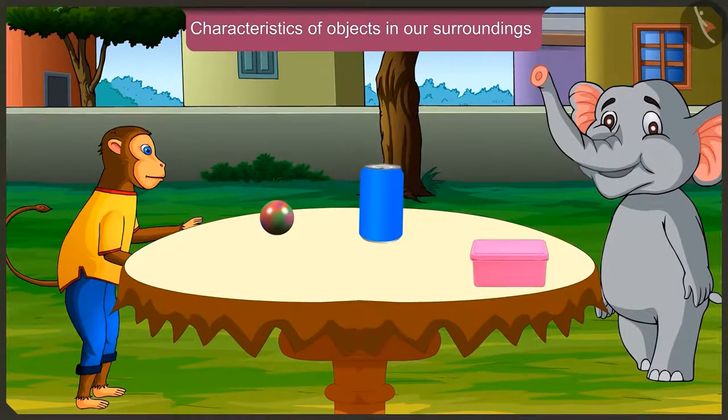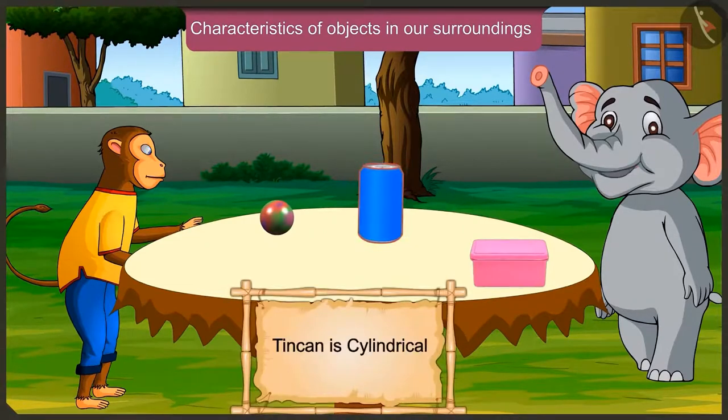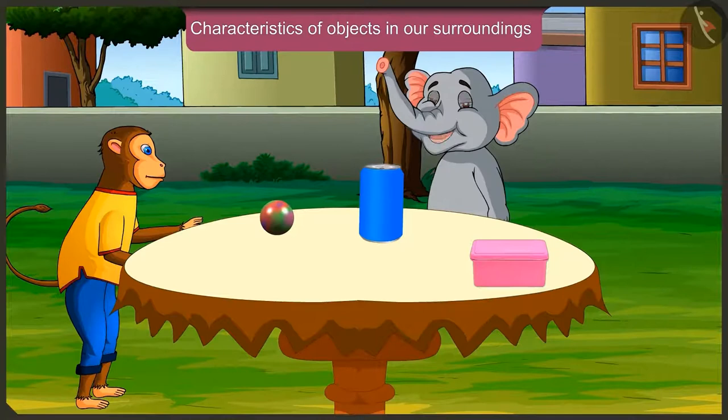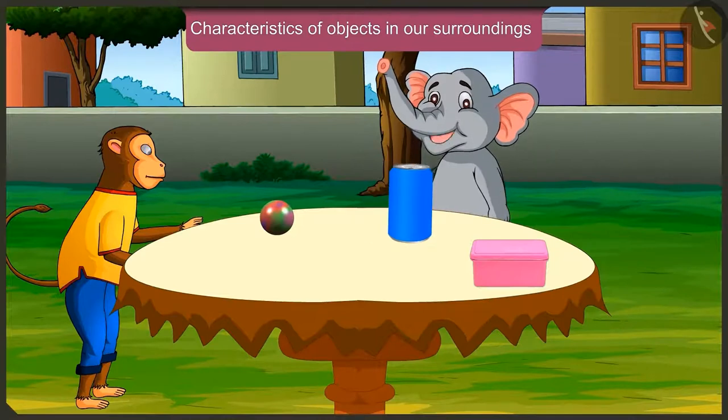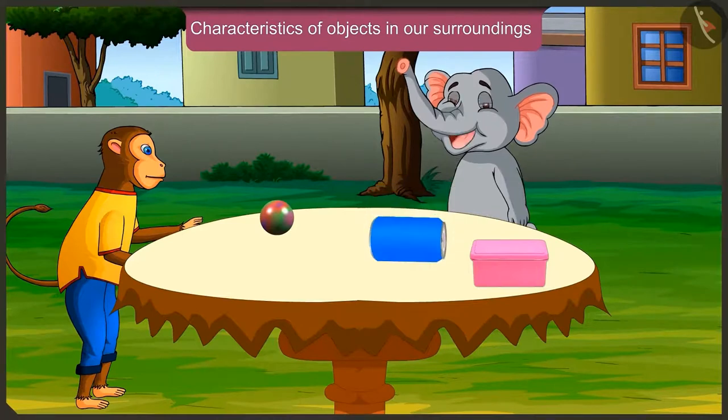And a tin box? Oh yes, this tin can has a cylindrical shape. That means it's a cylinder. So we can put it upright and slide it. And also roll it like this.